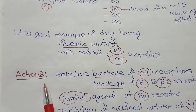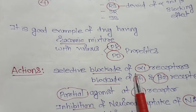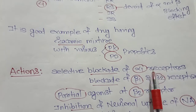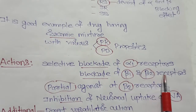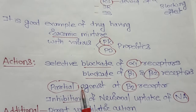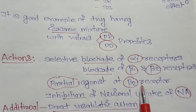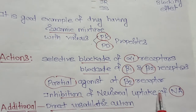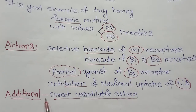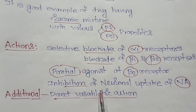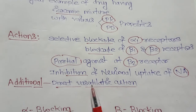The actions of Labetalol include: selective blockade of alpha-1 receptors, blockade of beta-1 and beta-2 receptors, partial agonistic activity at beta-2 receptors, inhibition of neuronal uptake of noradrenaline, and additional direct vasodilator action. Labetalol is a good example of a drug having a racemic mixture with various pharmacokinetic and pharmacodynamic properties.